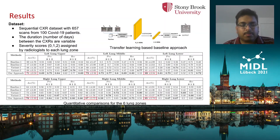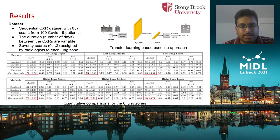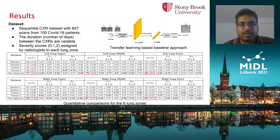As you can see from the tables, our approach outperforms both the baselines and the variants in terms of accuracy in all six lung zones. Also in terms of precision and recall, it is better in most cases.